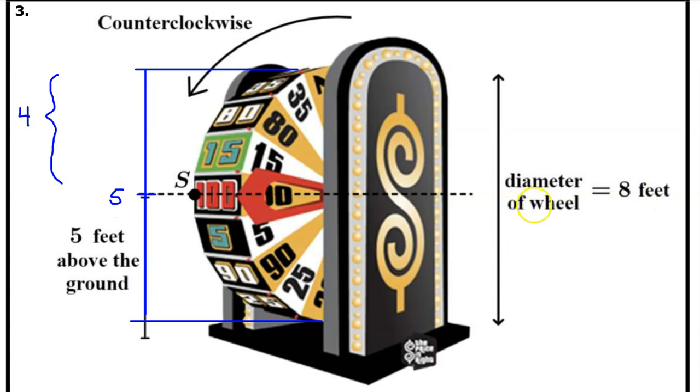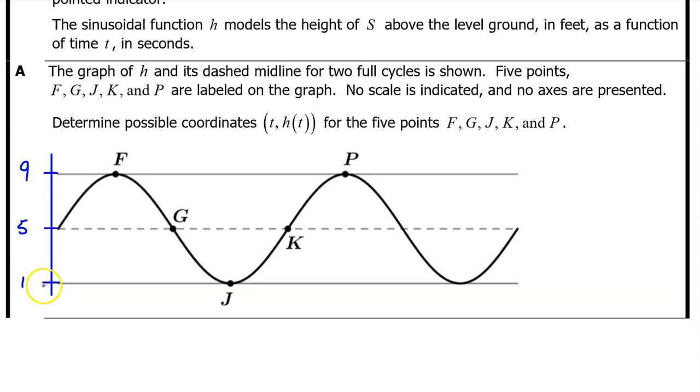Since the diameter of the wheel is eight feet from top to bottom, the radius of the wheel is four feet. So S will reach a high point that is four feet above the midline. Four feet above a midline of five feet will be nine feet. And point S will reach a low that is four feet below the midline. Four feet below five is one foot. We now have the minimum value, the maximum value, and the value of the midline. This gives us the output value coordinate for all five points.